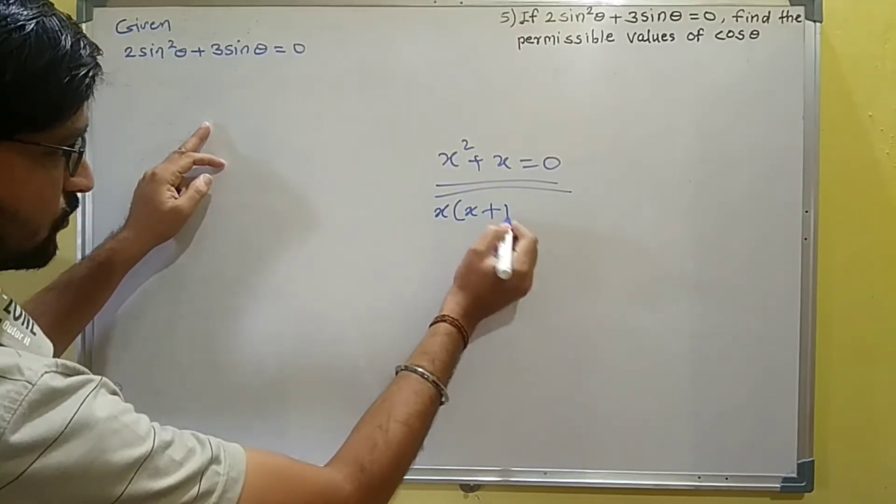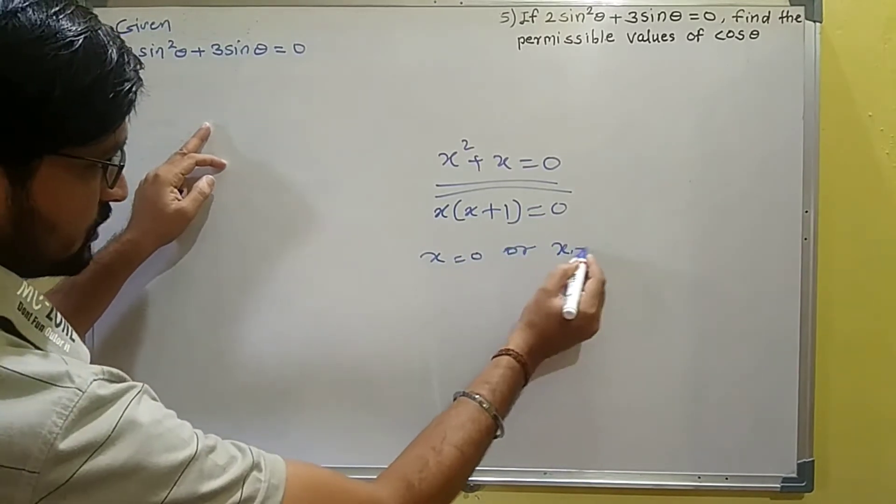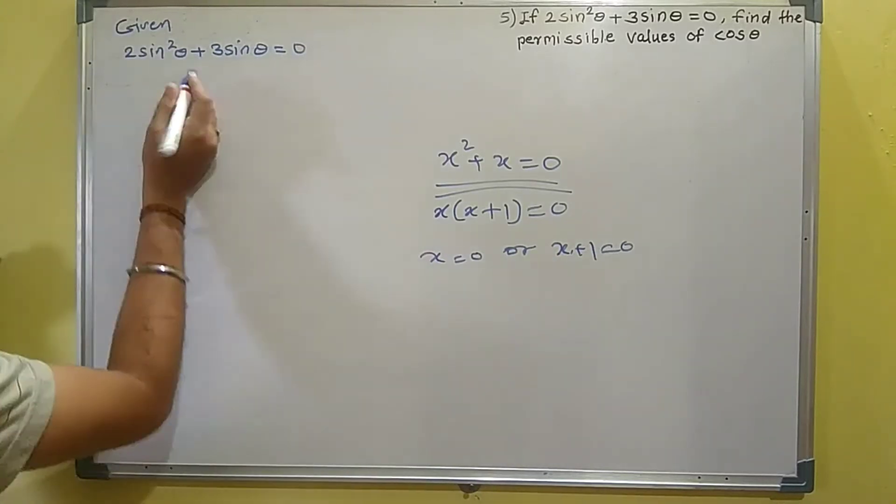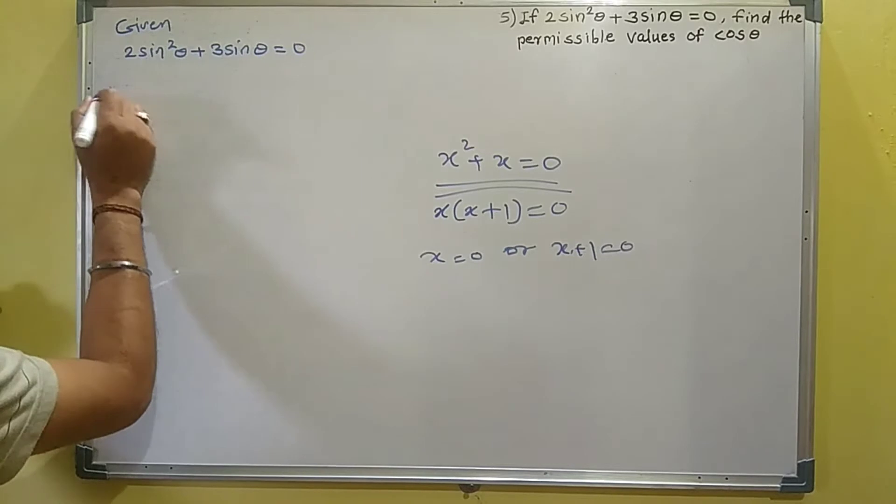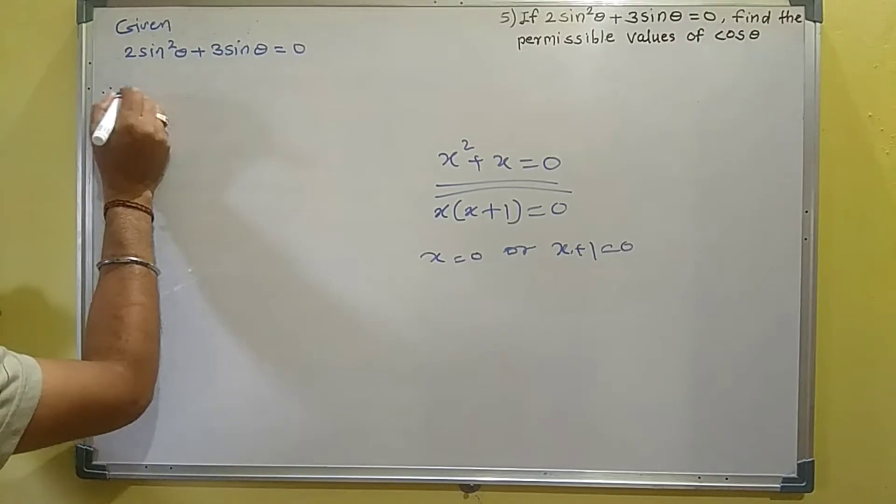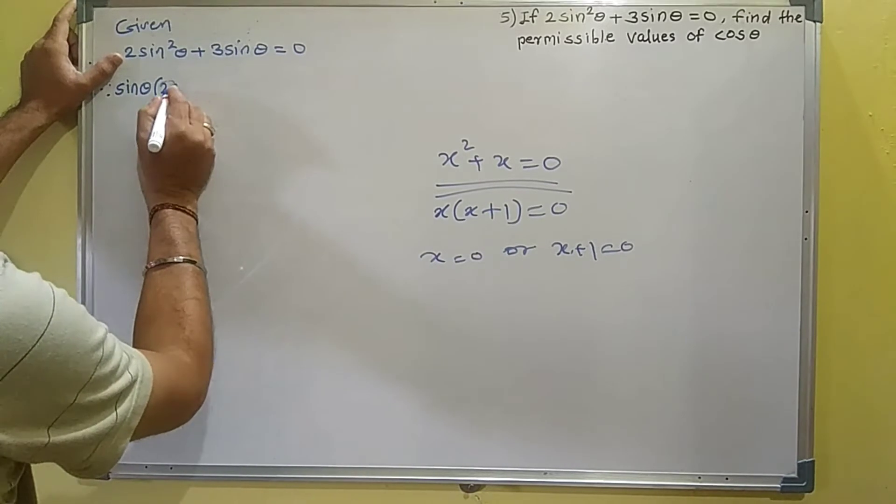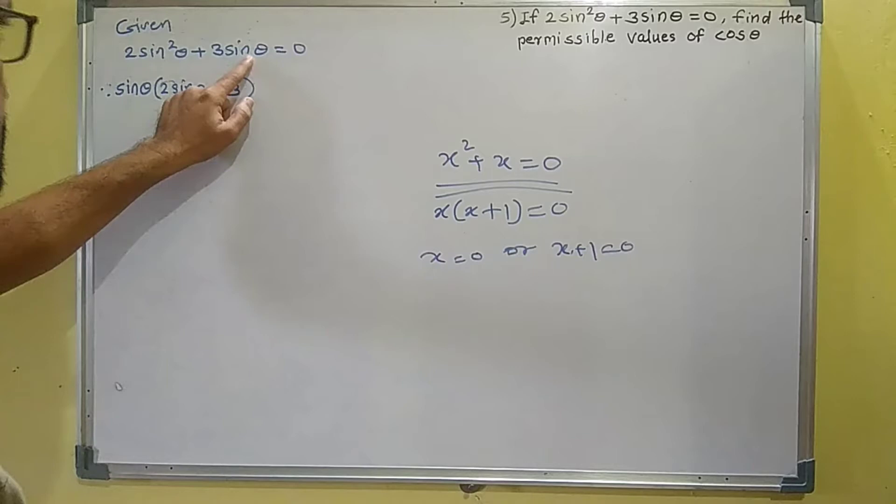If we take x common, then x(x + 1) = 0, which gives x = 0 or x + 1 = 0. Similarly here, we can take sinθ common from the first and second terms.